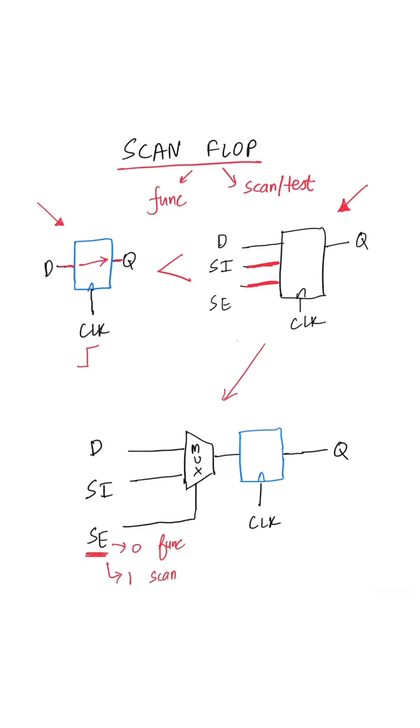So when scan enable is 0, it's regular operation where D goes to Q on the active clock edge. But when scan enable is 1, the test signal or test pattern which we send in through the scan in pin will go to Q.